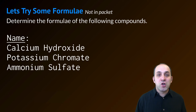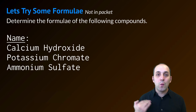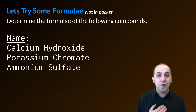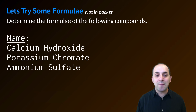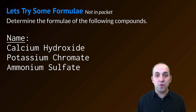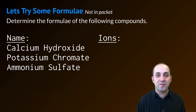Let's practice some ternary formulas. Determine the formula of the following compounds. These are not in your packet — pause the video, try it on your own, and then when you're ready, we'll go through it together. The same steps that I used when we did binary compounds are what I'm going to use here. The first thing I'm going to do is figure out the ions that are present in each of these compounds.